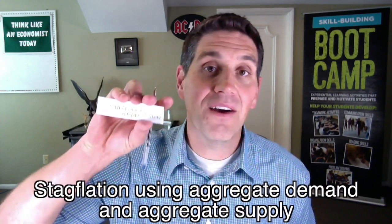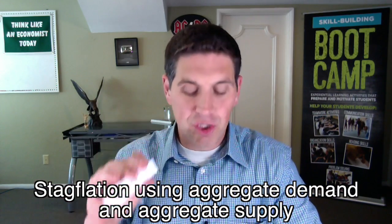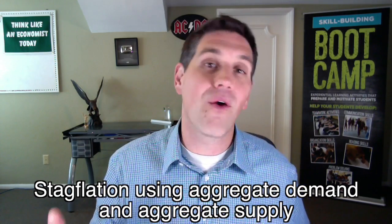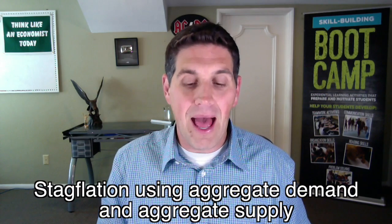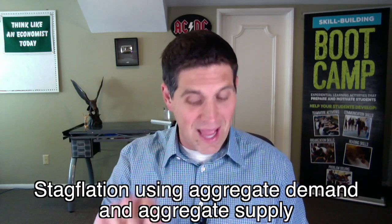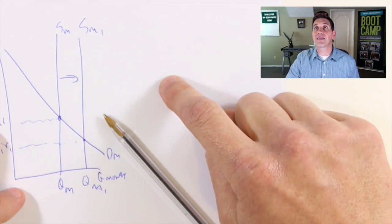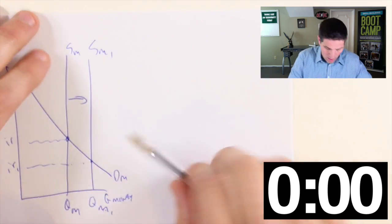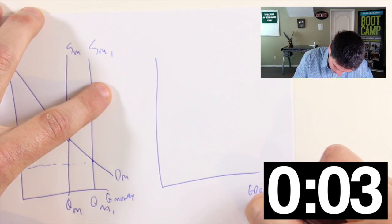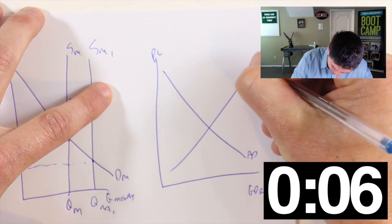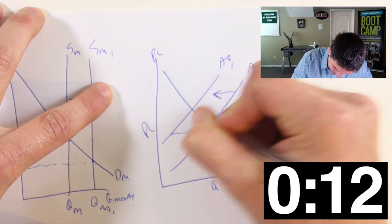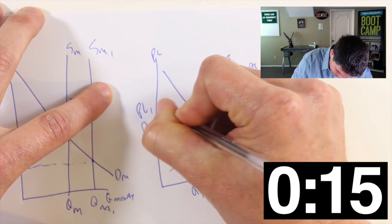Let's do stagflation. The graph for stagflation. Aggregate demand and supply and show the shift. Don't just show that stagflation already happened. Show a shift that causes stagflation. Drop that pencil. On your mark, get set, go. Stagflation. We've got GDP real, price level, aggregate demand, aggregate supply. Currently some sort of equilibrium. Here's the price level, aggregate supply shifts to the left. Q1, price level 1. Done.